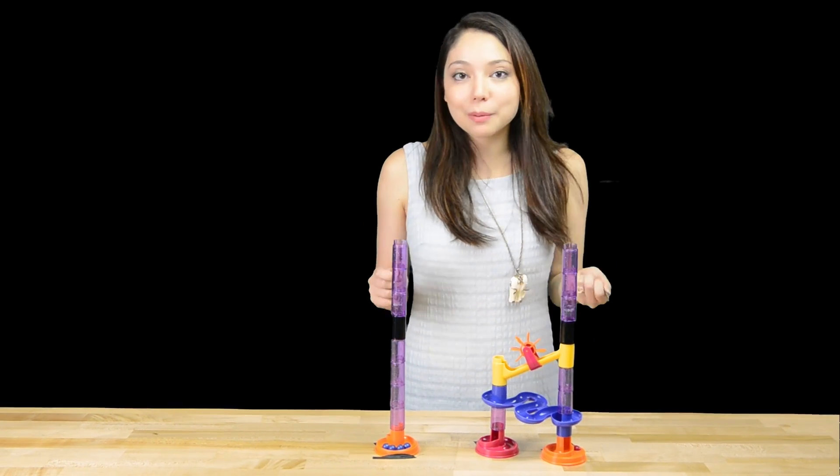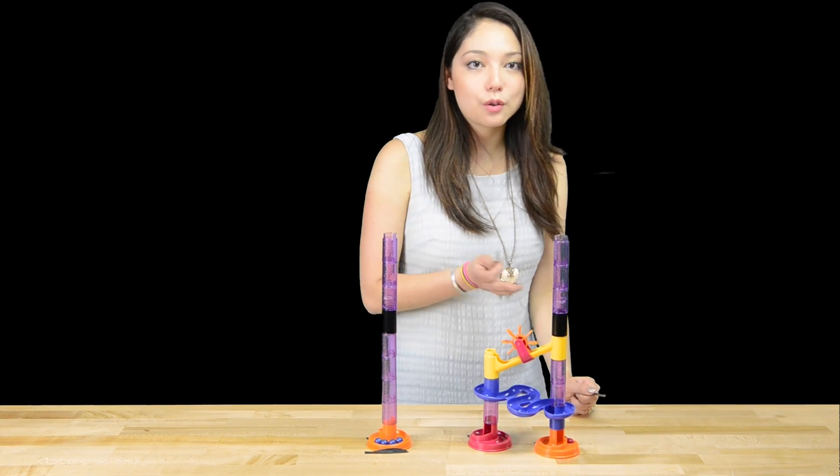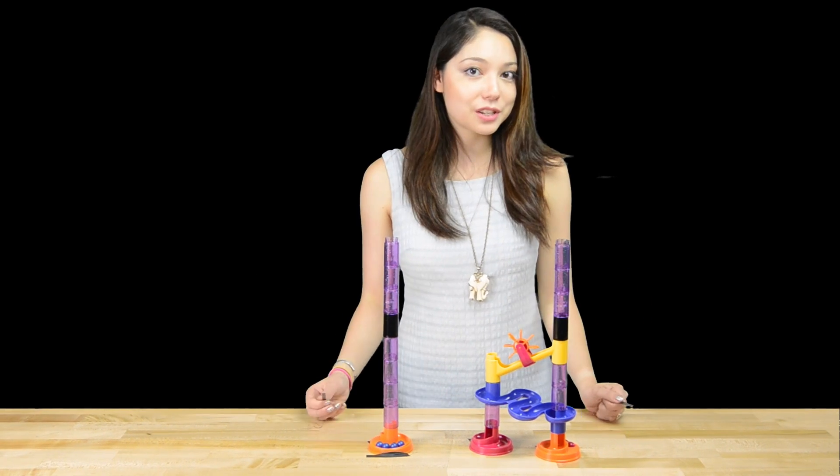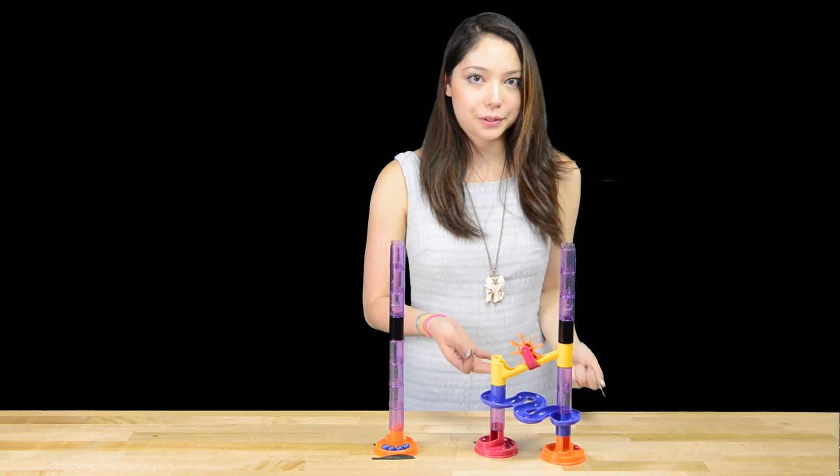So you can see here it was super obvious that these ones went straight to the bottom. And these ones were still kind of slowly meandering their way through. So that's a really good visualization of a short circuit versus what a resistor would look like.